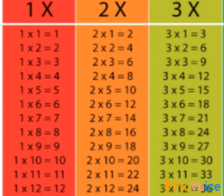Then table of 3: 3 1s are 3, 3 2s are 6, 3 3s are 9, 3 4s are 12, 3 5s are 15, 3 6s are 18, 3 7s are 21, 3 8s are 24, 3 9s are 27, 3 10s are 30, 3 11s are 33, 3 12s are 36.